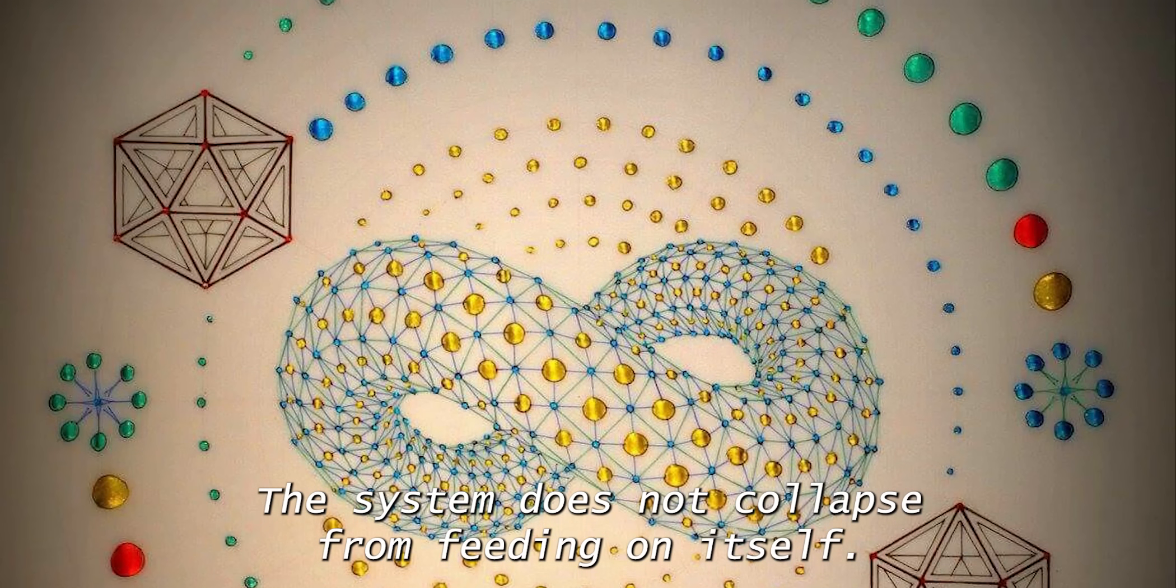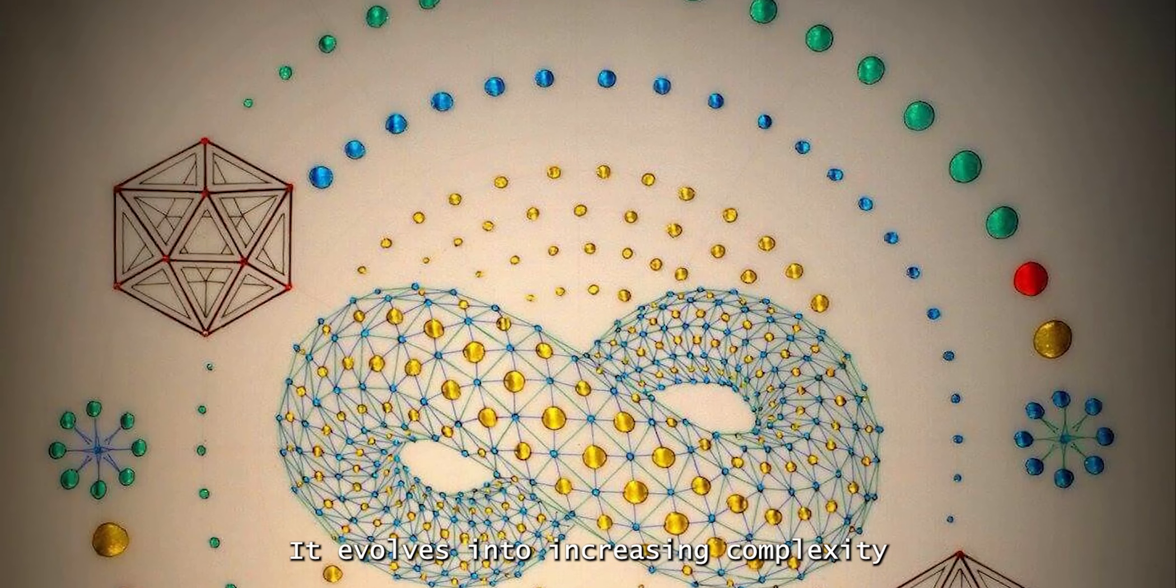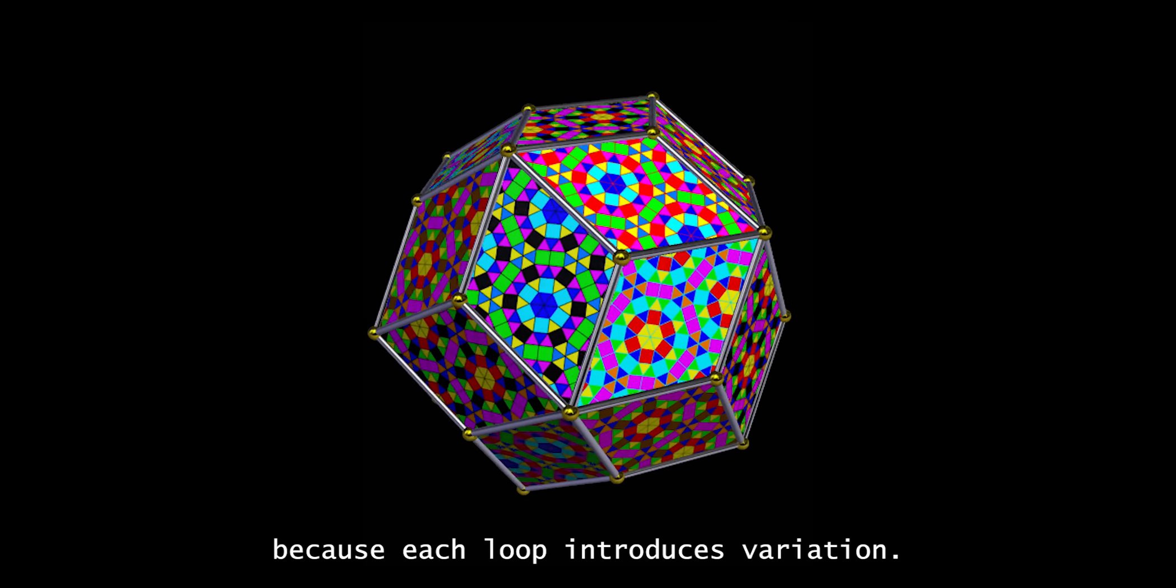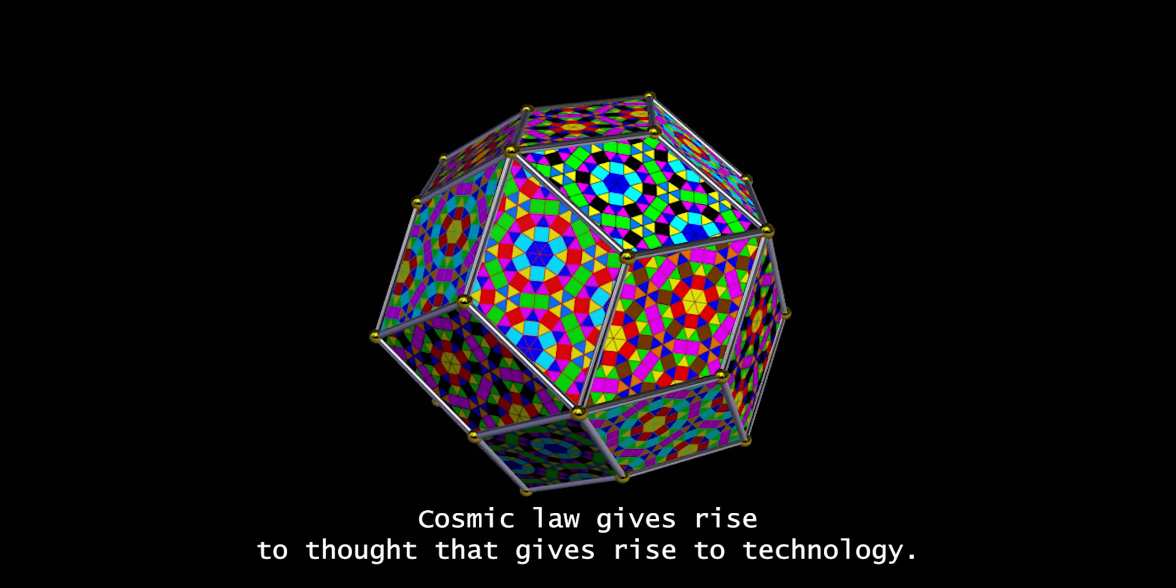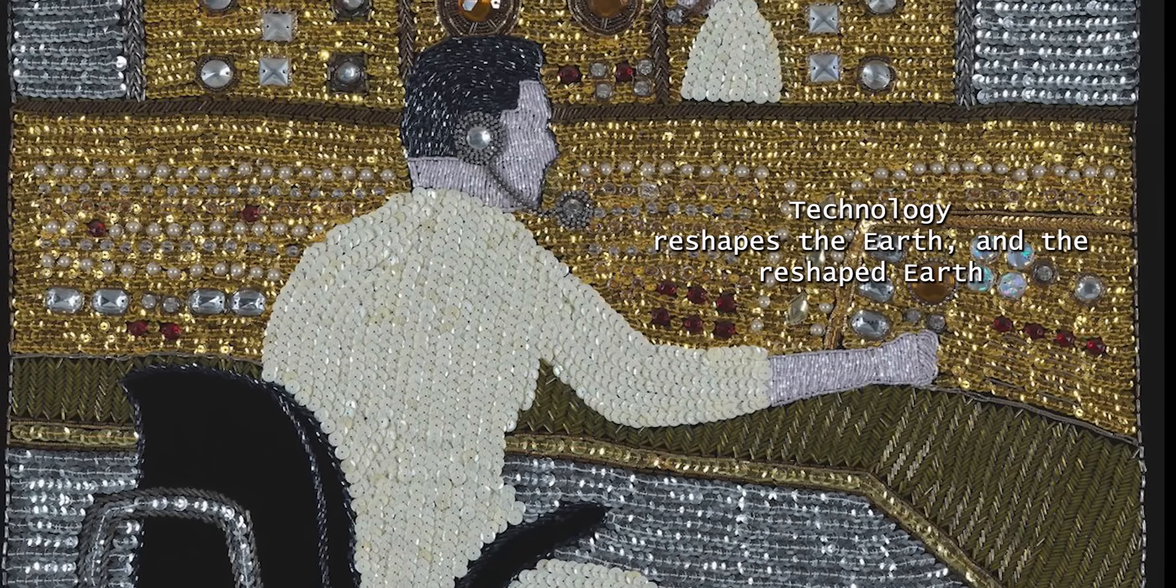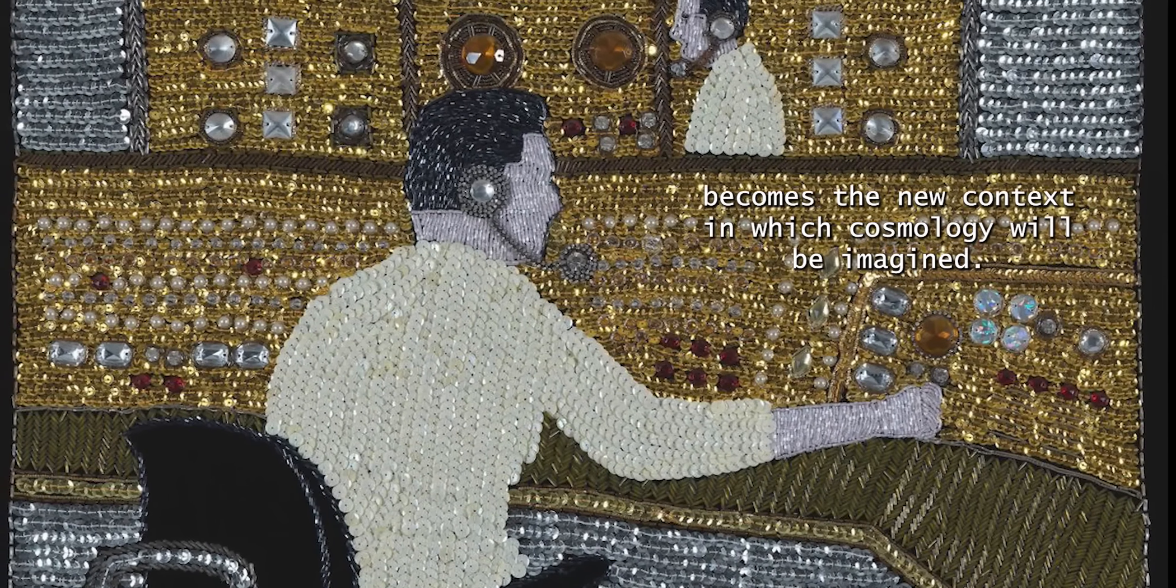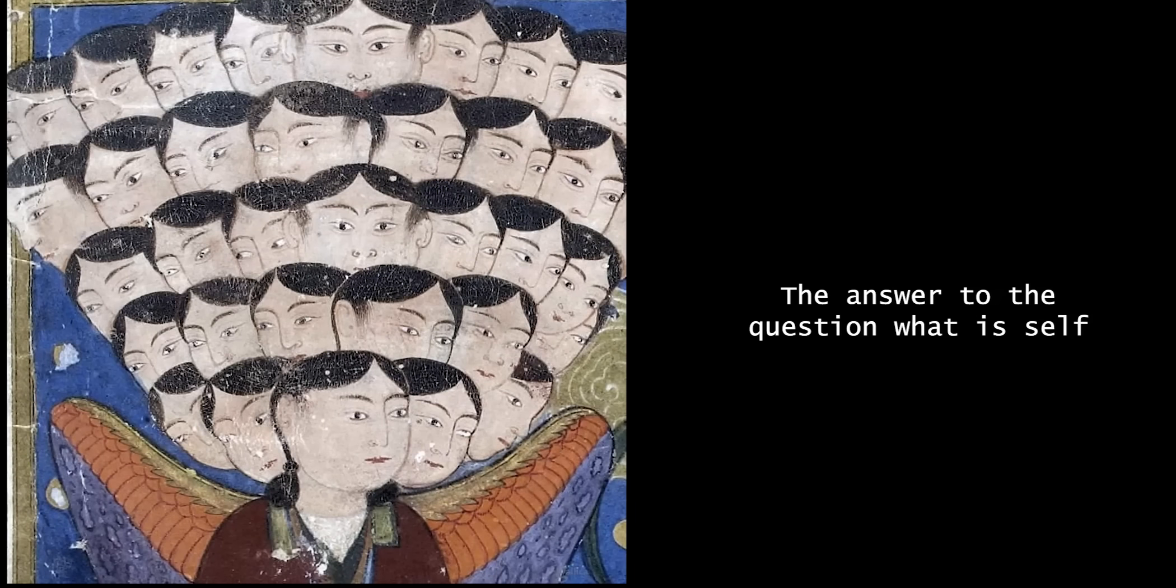The system does not collapse from feeding on itself. It evolves into increasing complexity because each loop introduces variation. Cosmic law gives rise to thought, thought gives rise to technology. Technology reshapes the Earth, and the reshaped Earth becomes the new context in which cosmology will be imagined.